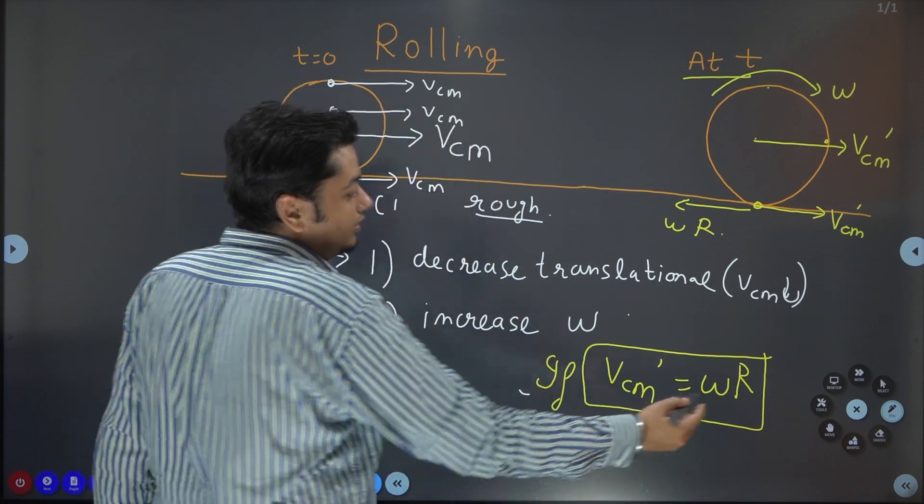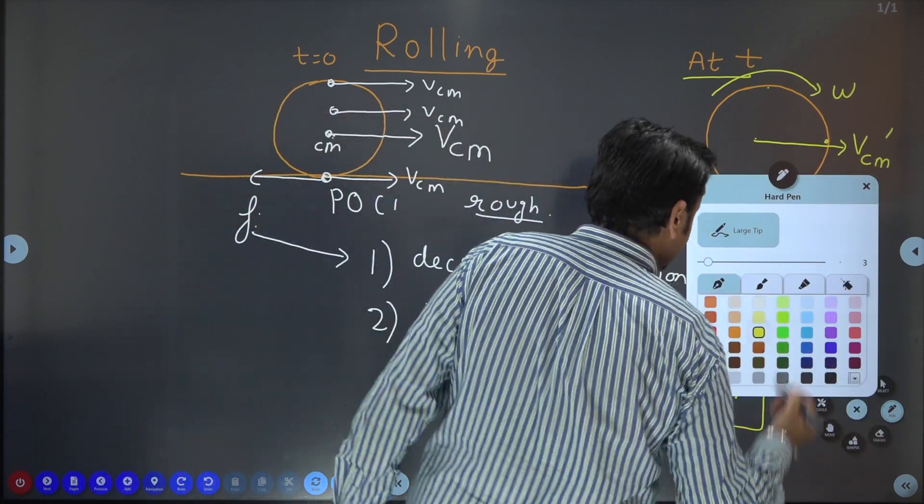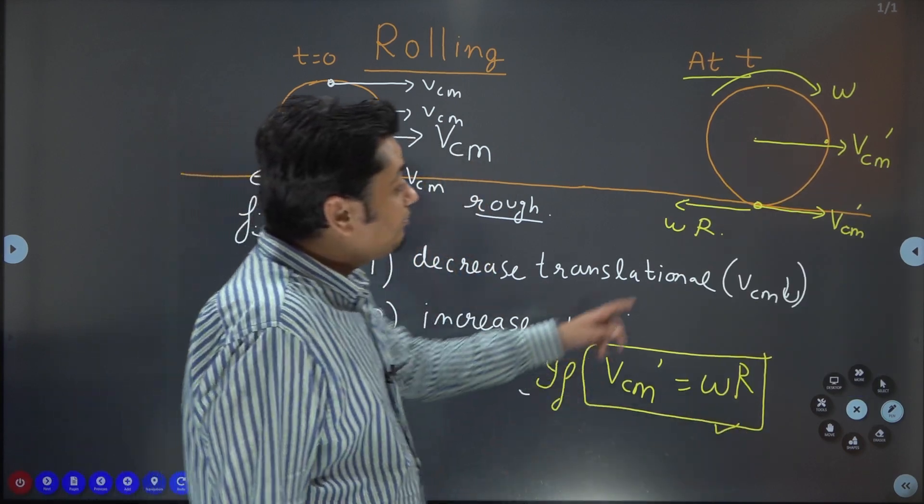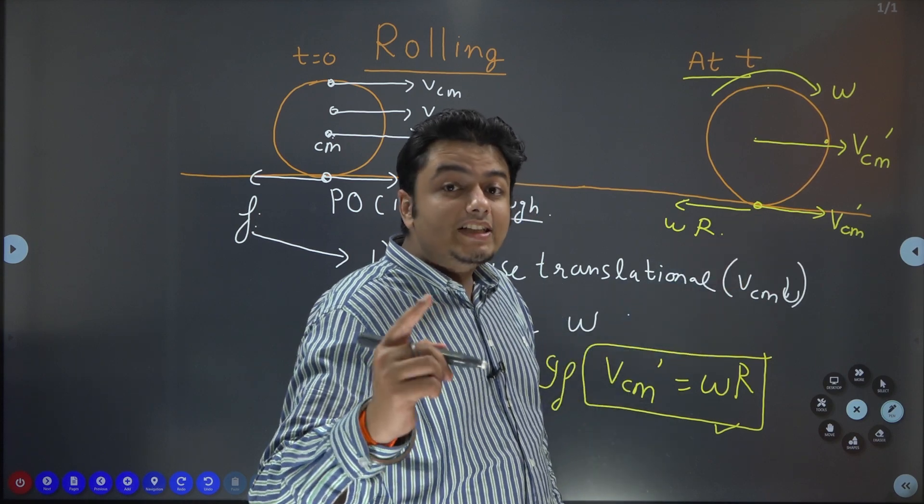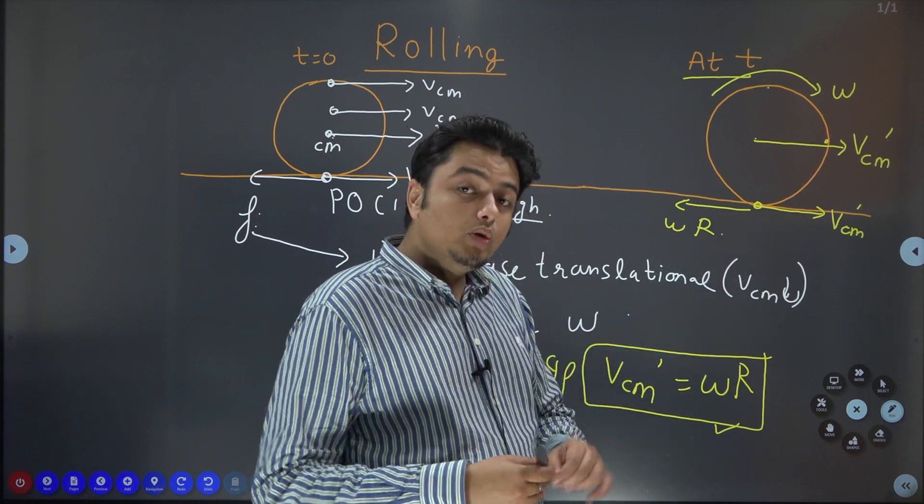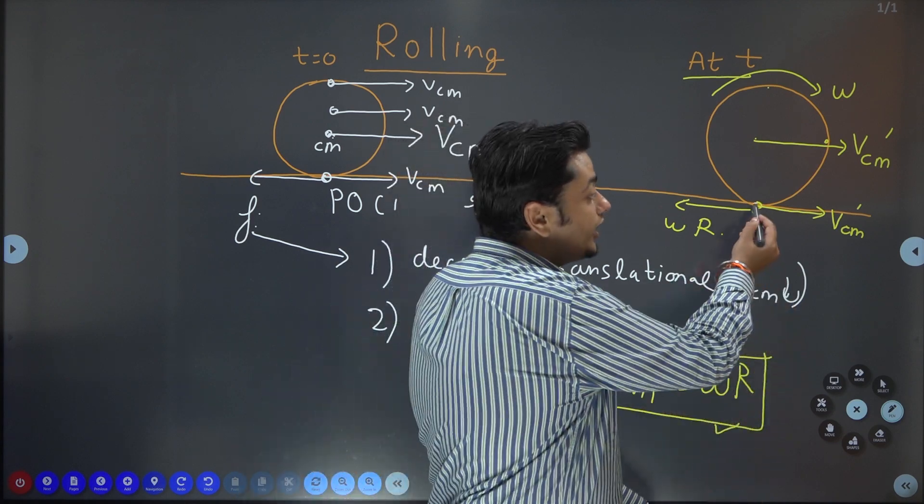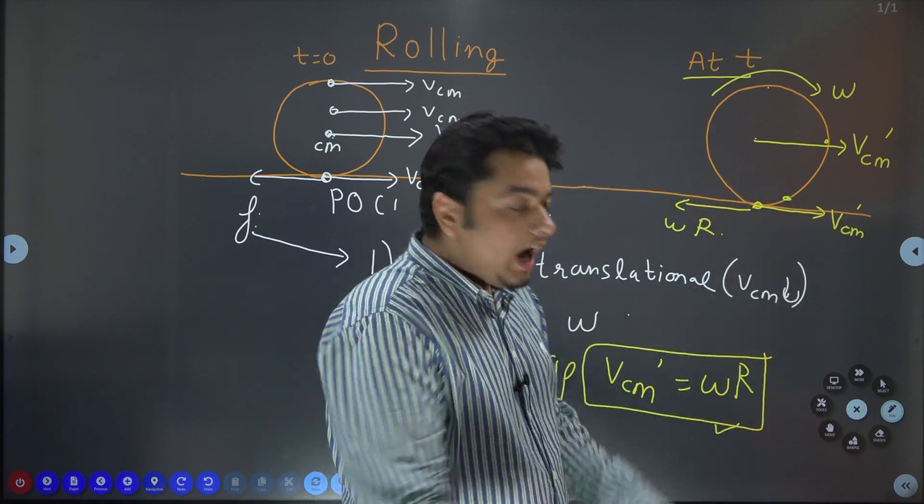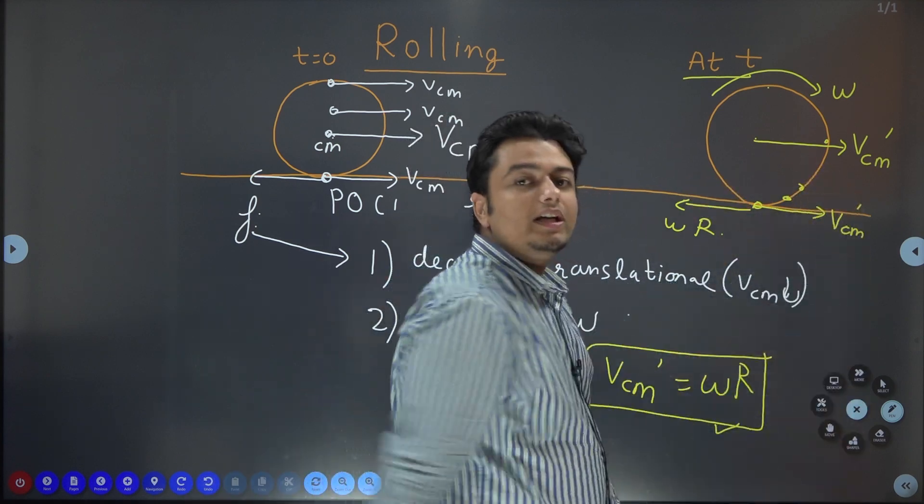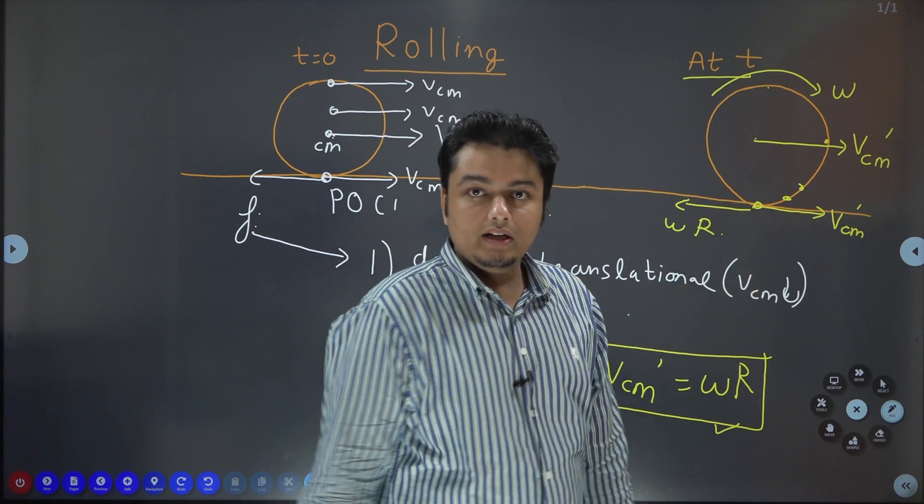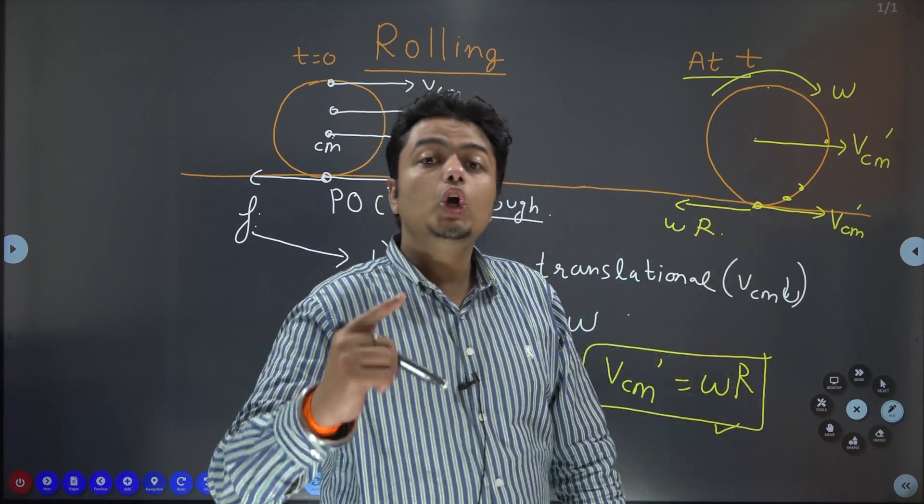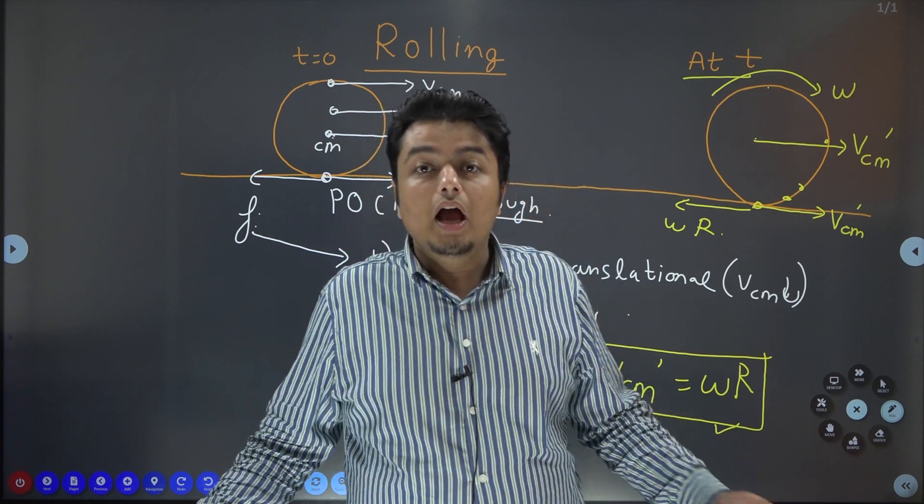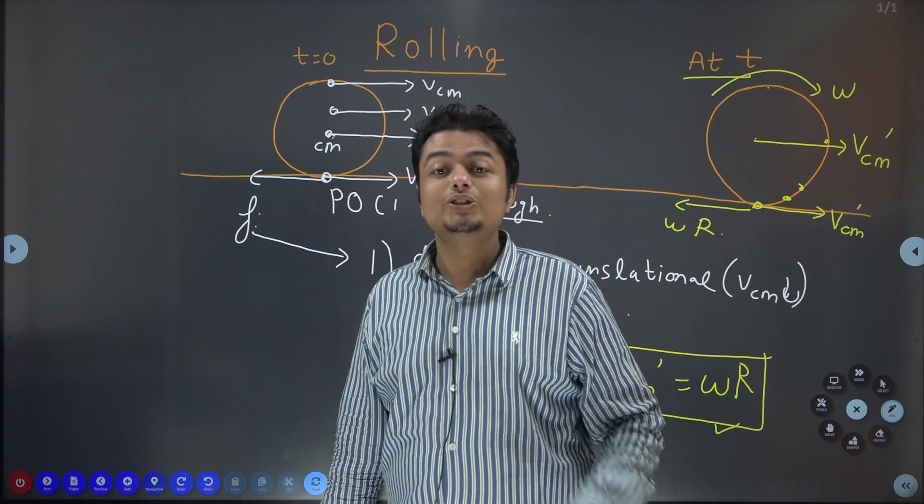So, now you got this relation which is very important. What is happening? POC at this moment has come to instantaneous rest. Why I am using this word instantaneous? Because this point is going to change. This point will take the place of this point. After some time this point will take the place of this point. And that is why I am saying this point has come to an instantaneous rest position. Why? Because VCM dash has become equal to omega r. And so, friction's responsibility is now over.